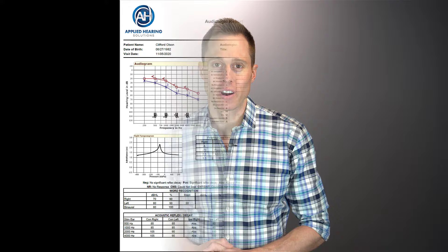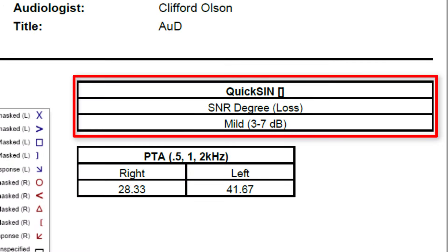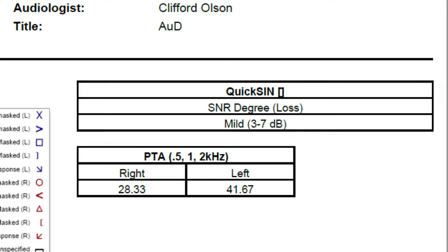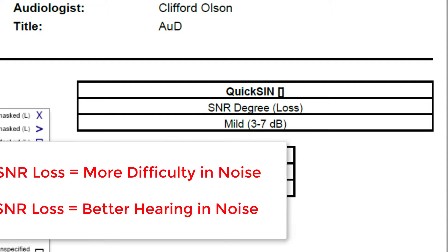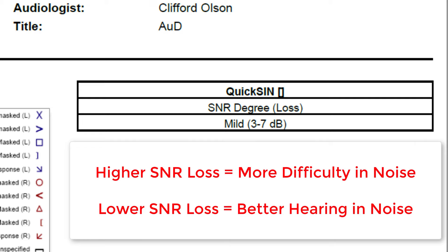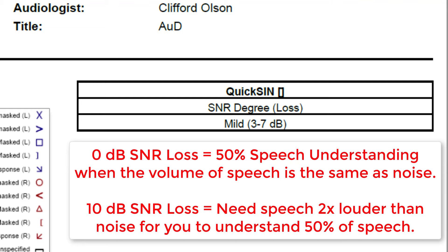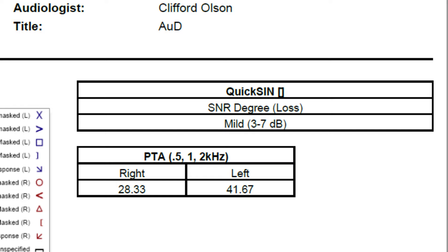Next, let's talk about your speech in noise score. In this particular case, the QuickSIN test was used. It stands for Quick Speech in Noise Test. You may see the term SNR loss being used when recording your results for speech understanding in noise. The higher the SNR loss, the more difficulty you should expect to have in background noise. Ideally, you would want a very low SNR loss, as close to zero as possible. If you have a score of zero dB SNR loss, it means that the level of speech you want to hear can be at the same level as the background noise and you will be able to understand 50% of what is being said. However, if you score something higher, like a 10 dB SNR loss, you need speech to be twice as loud as the background noise before you can understand 50% of what is being said. Knowing your dB SNR loss number is important when it comes to determining if you need additional assistance beyond hearing aids alone if you desire to hear well in background noise.